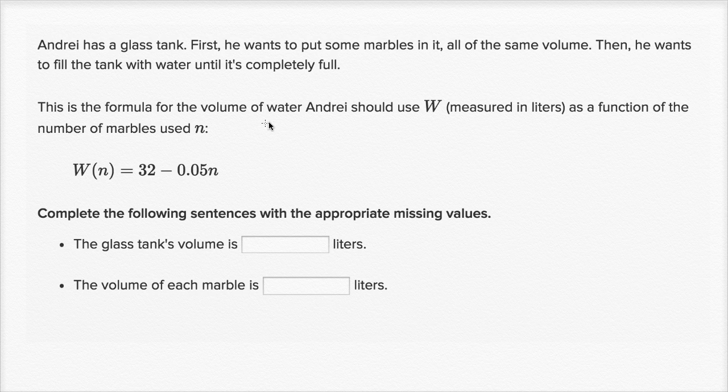This is the formula for the volume of water Andre should use W, measured in liters, as a function of the number of marbles used n. And we see that the amount of water he needs to put in as a function of the marbles used n is equal to 32 minus 0.05n.